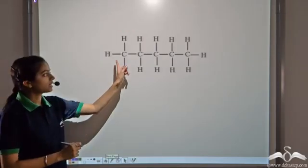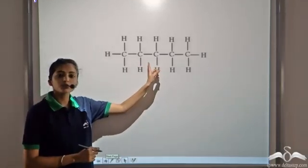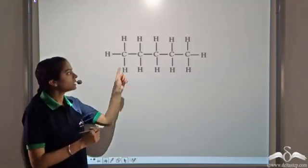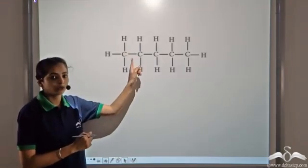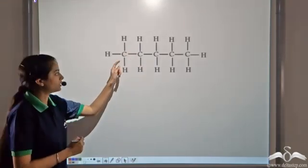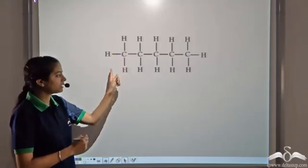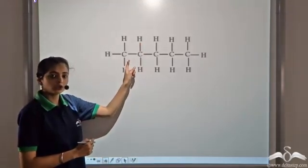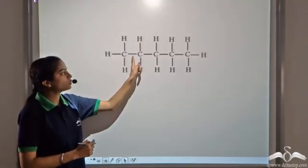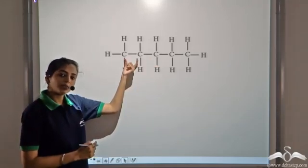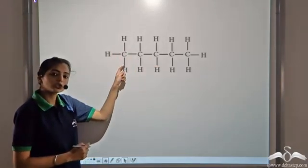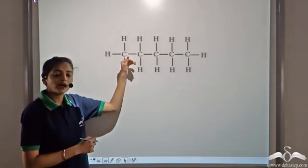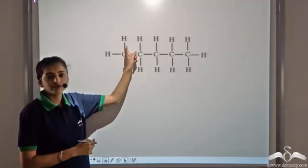We know that carbon atoms can be linked to each other. This property of carbon atoms is known as catenation, and to satisfy the octet, each carbon atom contains 4 covalent bonds. If we are talking of hydrocarbons, the remaining positions are taken up by the hydrogen atoms.